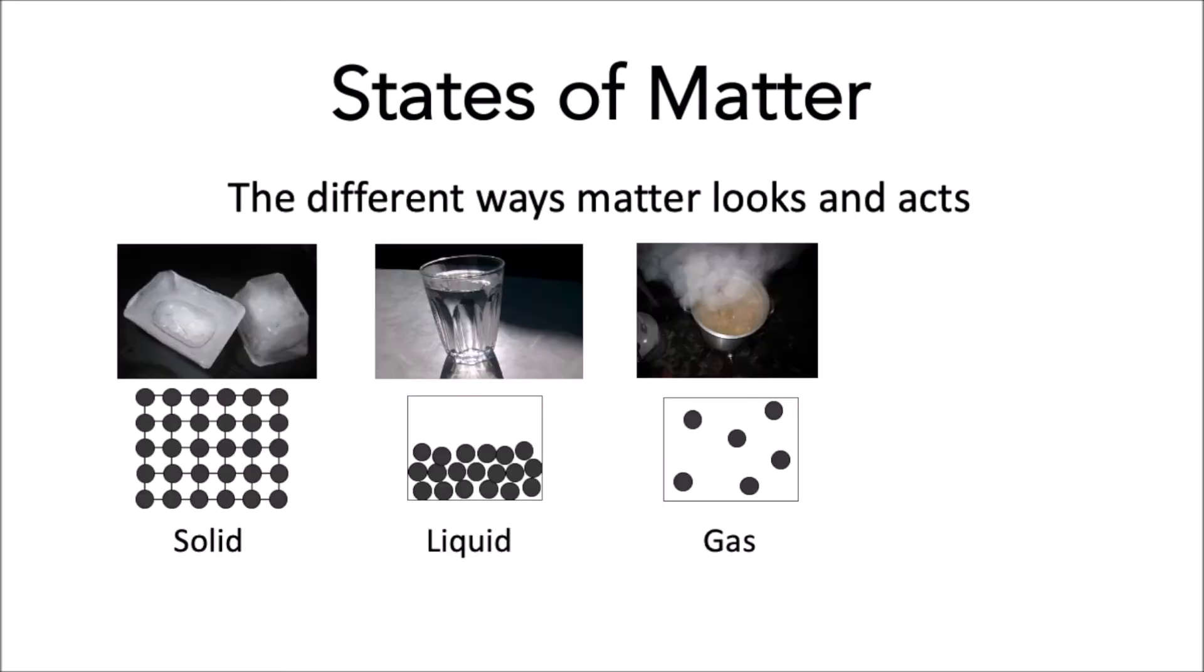The three most familiar ones are solid, liquid, and gas. In the solid phase, compounds have strong bonds or connections with each other that make them arrange in a specific pattern. An example of this is ice.